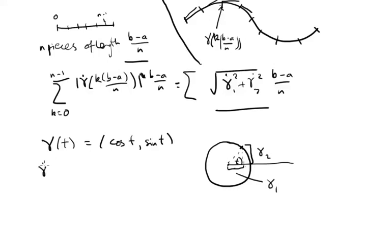So what's gamma dot? Well, it's a tangent vector. It's going to look something like this. So we go around the circle. Just differentiating, we get sine of t, cos of t.